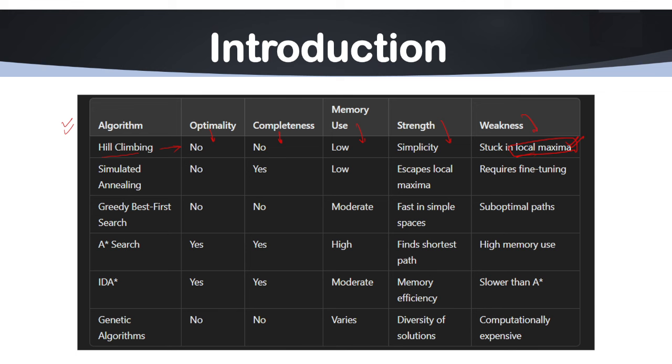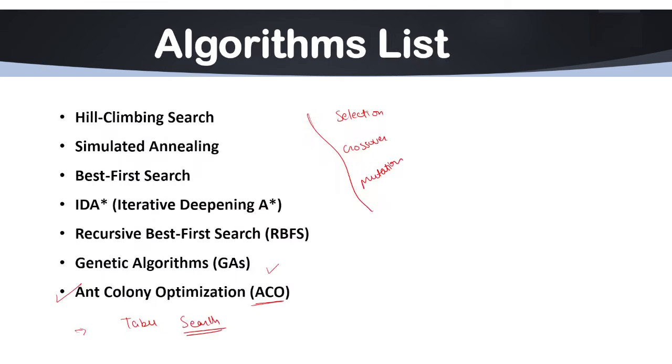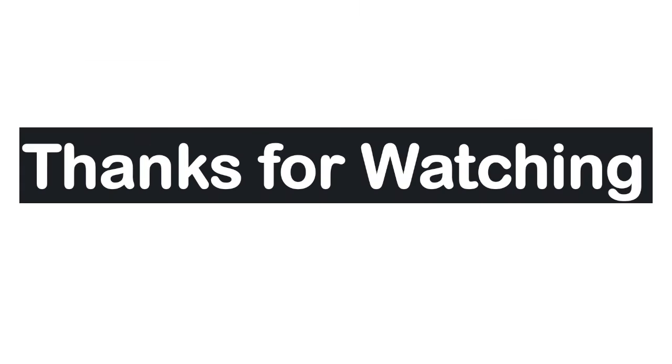These are all the algorithms and this is the comparison of different characteristics. You must revise this table carefully—it's very important. I hope everything is clear. If you want me to continue the series, please comment below. Thank you so much everyone.